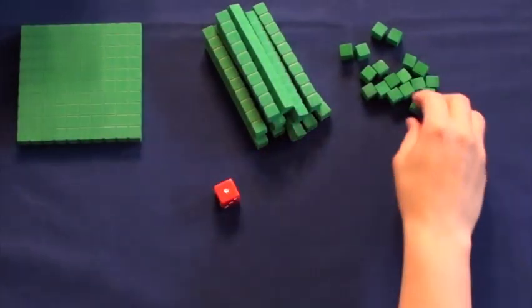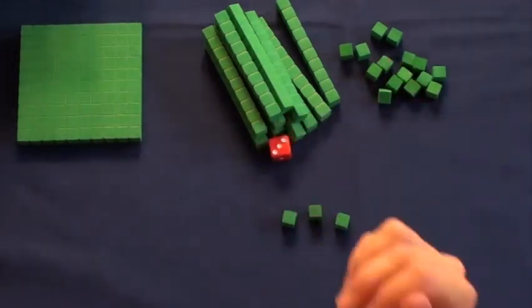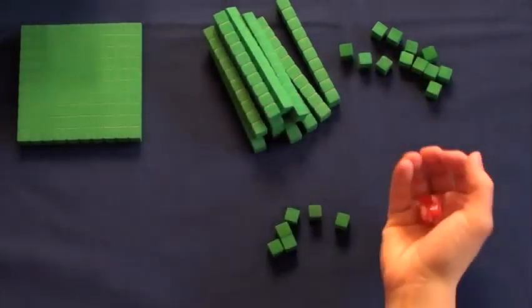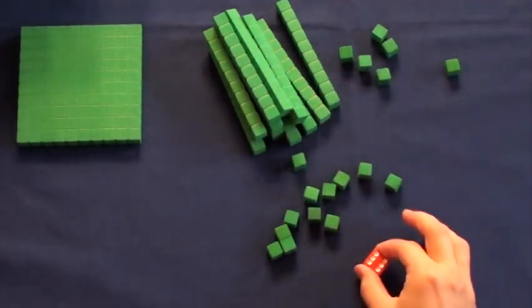My students like to practice place value by playing Race to 100. You start the game by gathering base ten blocks and a die. Roll the die and add the number in ones blocks. When you get ten or more ones, trade them up for tens.